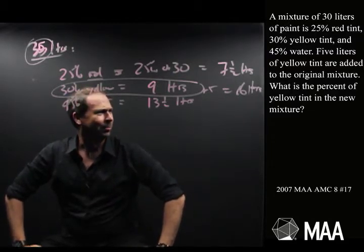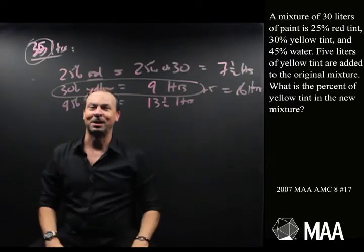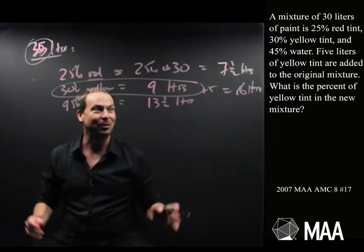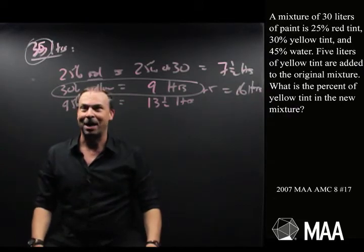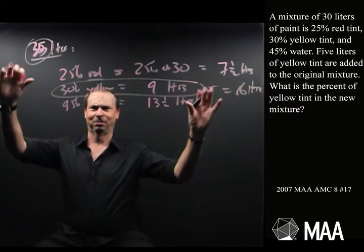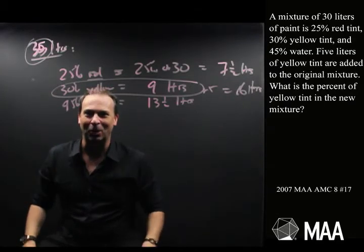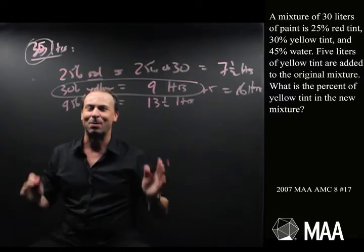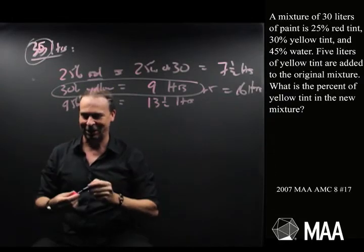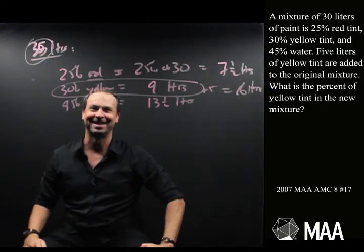What was the question? What is the percent of yellow tint in the new mixture? I think I have all the information on the board. The percentage of yellow tint is 14 litres out of 35 litres. I'll leave you to finish that calculation — check your answer with mine in the essay for this video. Thanks so much.